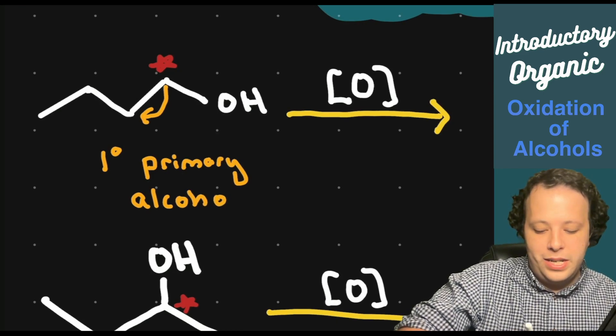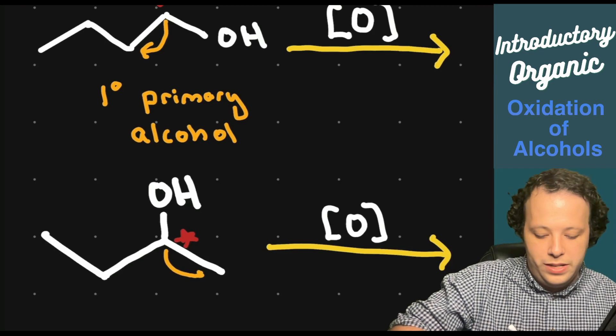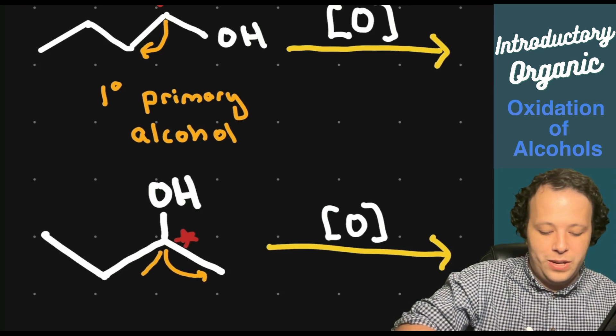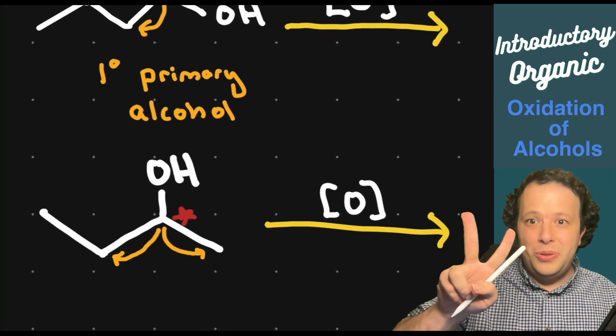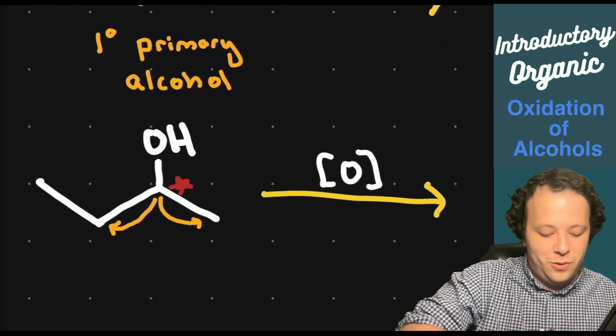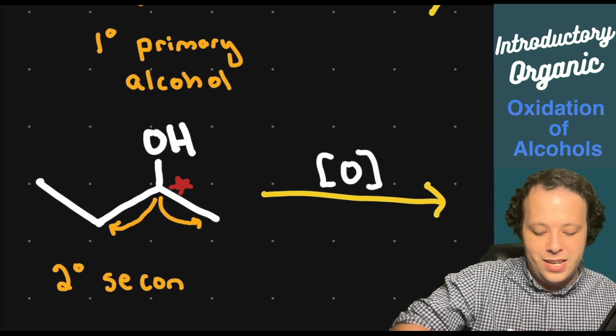For the second one, if I do the same idea, we're going to count one carbon on the right and one carbon on the left, meaning we have two. So it's secondary or two prime. Two prime is a secondary alcohol.